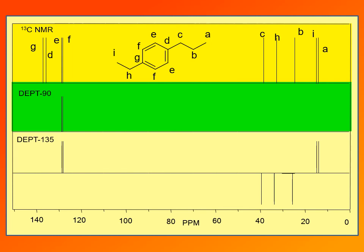To distinguish between the remaining carbon types, we record DEPT-135. In DEPT-135, CH carbons still appear as positive, and CH3 carbons also appear as positive — so signals A and I are assigned as CH3 carbons, since they appear in DEPT-135 but not DEPT-90. Three negative signals — B, H, and C — allow us to conclude those are CH2 groups, since only CH2 appears as negative in DEPT-135. Finally, D and G are quaternary carbons with no hydrogens, since they appear only in the normal carbon-13 spectrum and not in DEPT-90 or DEPT-135.